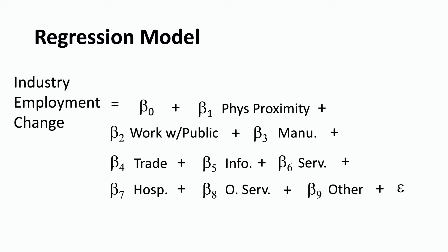So we have a couple types of variables in this regression model. The first two — physical proximity and working with the public — are quantitative variables. They go between zero and one, measured as the percentage of employment in an industry with those characteristics. The rest of the variables are industry dummy variables, which take on the value of zero or one. So if the sector you happen to be studying is manufacturing, that manu variable equals one and the rest of the industry dummies equal zero. Or if it's a hospitality sector, hosp equals one and the rest equal zero.